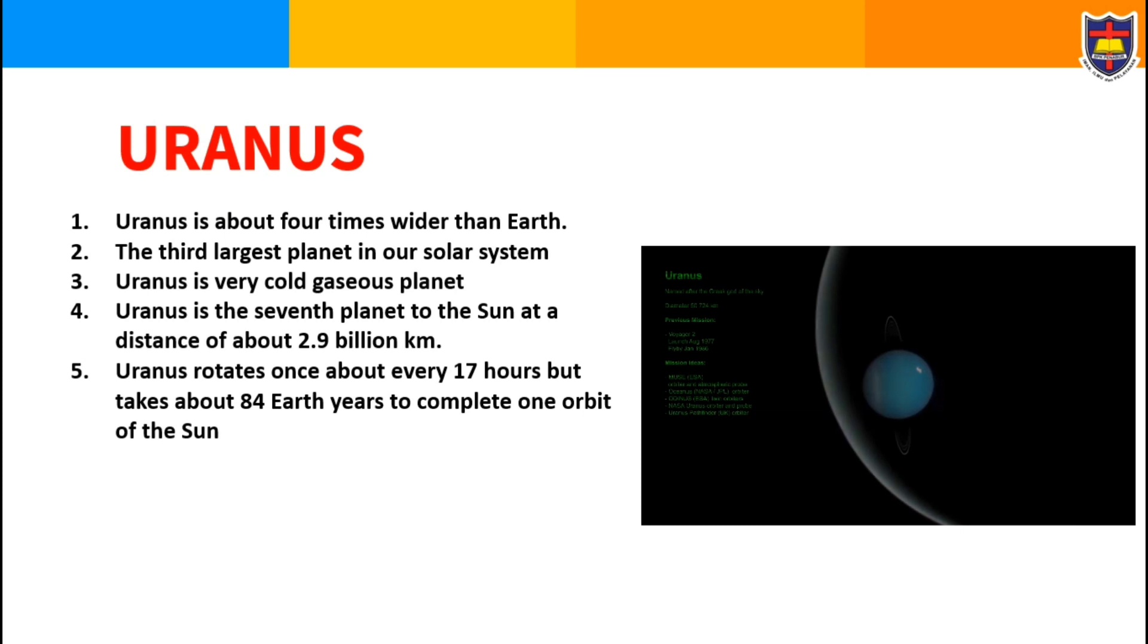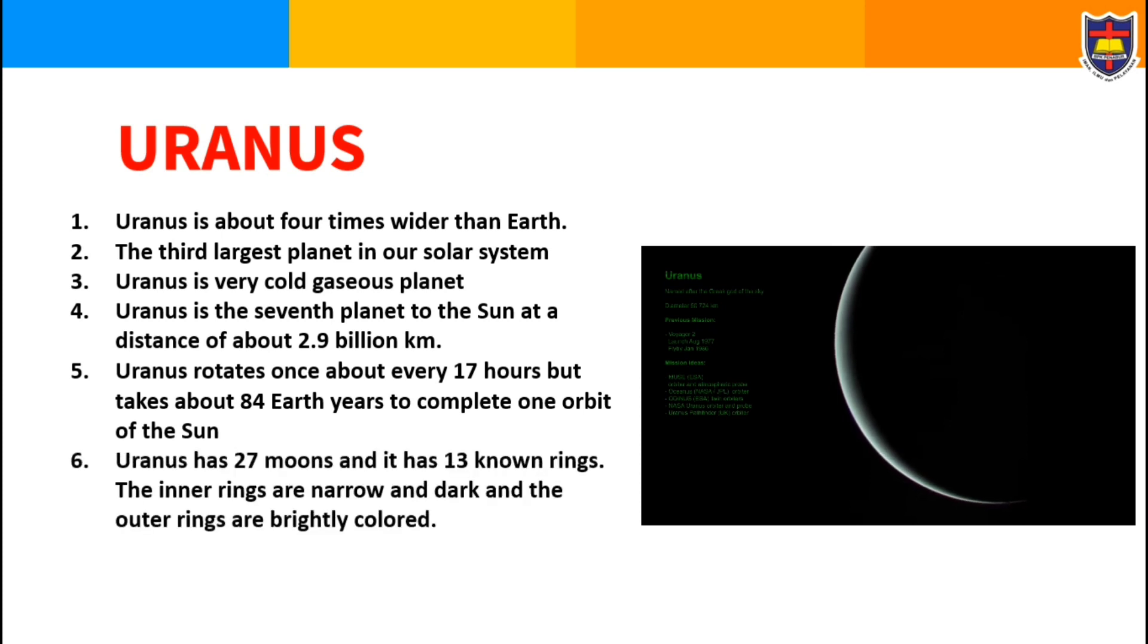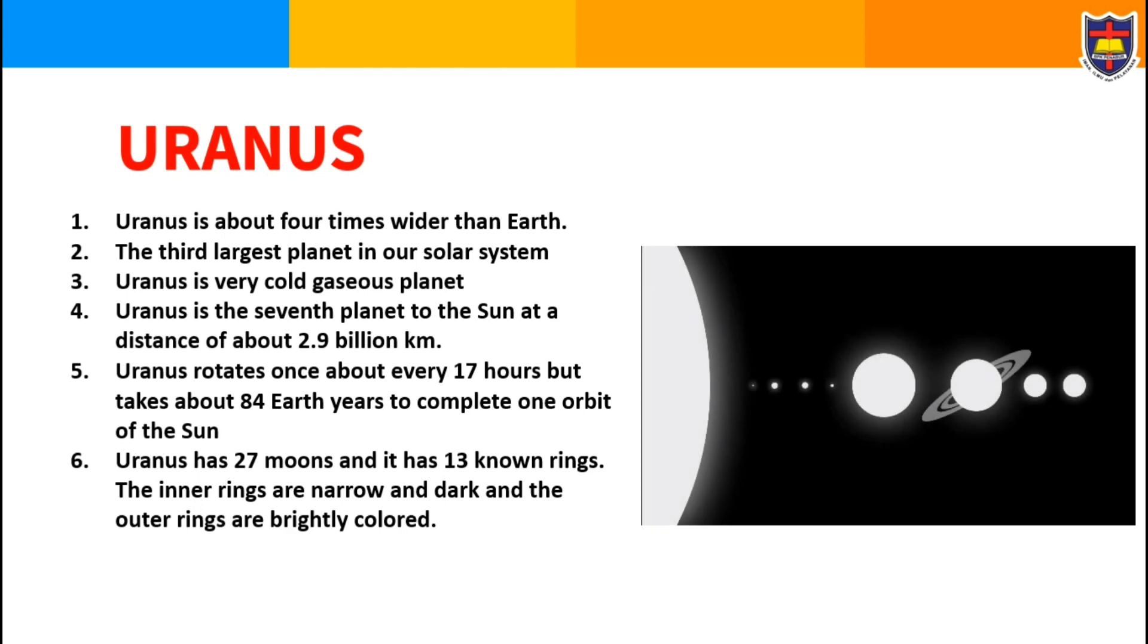Uranus rotates once about every 17 hours but takes about 84 Earth years to complete one orbit of the Sun. Uranus has 27 moons and it has 13 known rings. The inner rings are narrow and dark, and the outer rings are brightly colored.